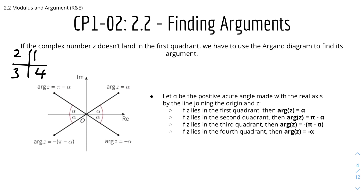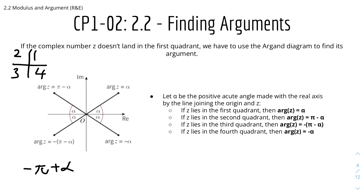If z lies in the second quadrant, then arg z equals pi minus alpha, because pi equals 180 degrees, so 180 degrees minus alpha gives you that angle. If z lies in the third quadrant, then arg z equals minus (pi minus alpha), or equivalently minus pi plus alpha. And if z lies in the fourth quadrant, then arg z equals minus alpha.